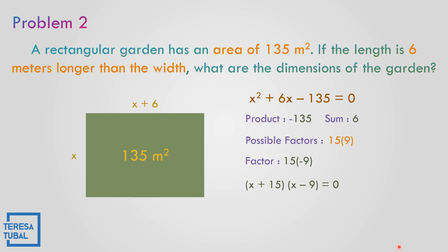The factors are (x plus 15)(x minus 9) equals 0. Using the zero product property: x plus 15 equals 0, so x is equal to negative 15 — rejected, since there is no length or width that is negative. For the other factor: x minus 9 equals 0, so x is equal to positive 9. Let us replace positive 9 into the given equation. x is the width, so the width is equal to 9. The length is x plus 6, that becomes 9 plus 6, so the length is 15 meters. The width is 9 meters and the length is 15 meters.